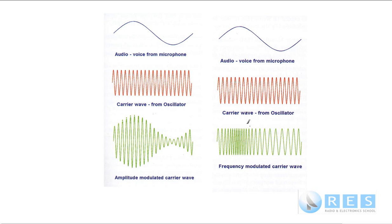FM signals tend to be a larger bandwidth than AM signals, meaning they take up more room in the radio spectrum. A typical amateur FM transmission is 16 kHz wide. A typical amateur SSB transmission is 3 kHz wide, and double sideband is about 6 kHz wide.